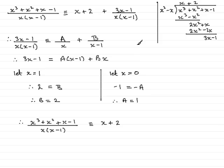And then plus A over x, so that's 1 over x, and then plus B, which is 2 over x minus 1, plus 2 over x minus 1. And so, we have our fraction expressed in partial fractions.